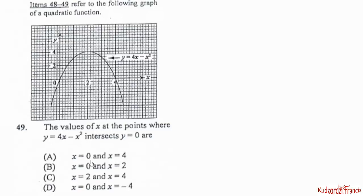Item 49: Find the values of x where y = 4x − x² intersects y = 0. The line y = 0 is the x-axis. The graph intersects the x-axis at two points: x = 0 and x = 4. Therefore the correct option is x = 0 and x = 4.